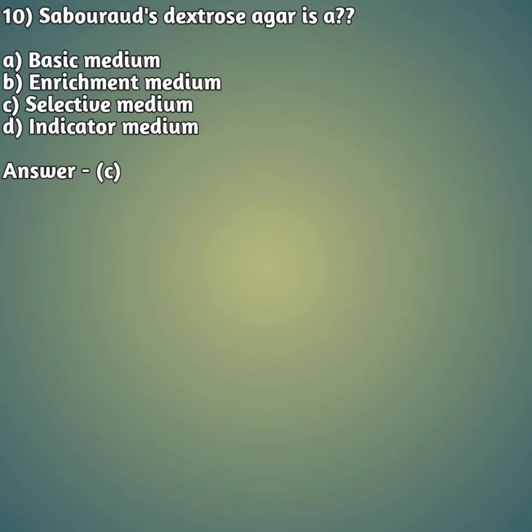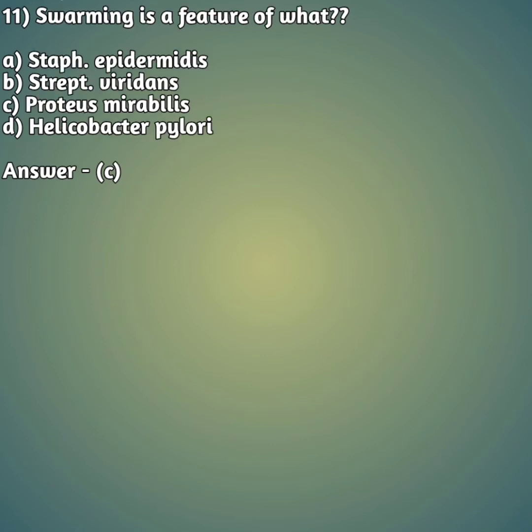Our tenth question: Sabouraud's dextrose agar is what type of medium? Option A: basic medium, option B: enrichment medium, option C: selective media, option D: indicator medium. The right answer is option C — selective medium.